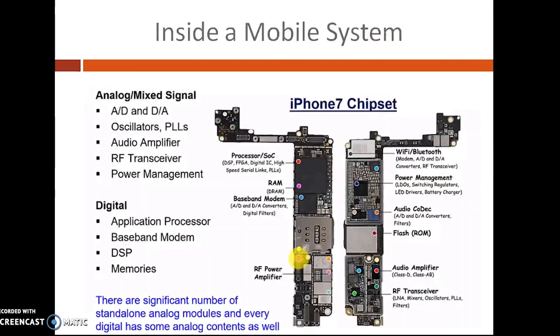Let us look inside an iPhone 7 chipset. You can see a significant number of standalone analog modules such as ADCs, DACs, oscillators, phase locked loops, and power management circuits. The courses in our department will cover almost all sections of this chipset at a reasonable depth, so that at the end of the program you will achieve a good mastery over all these niche areas.